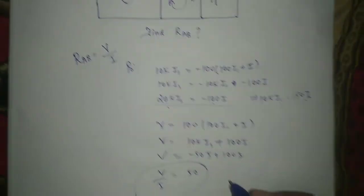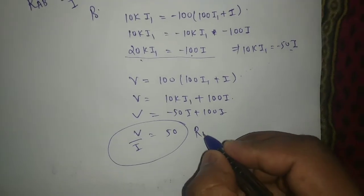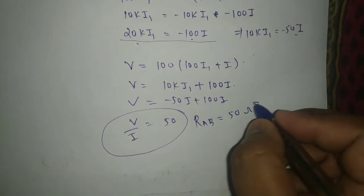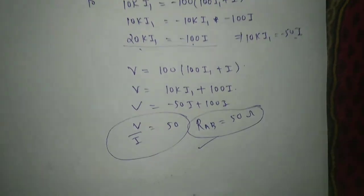So RAB, RAB is 50 ohm. So this is the answer. Thank you.